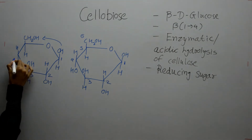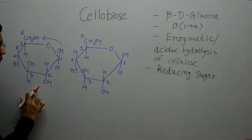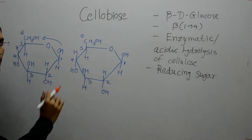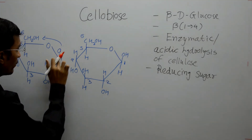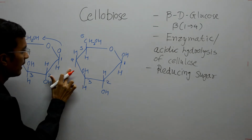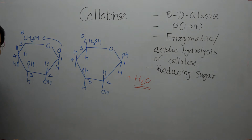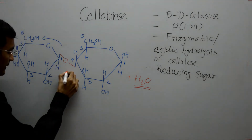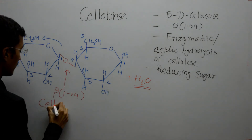The bond is a beta-1,4 bond, which is formed between the first carbon of one beta-D-glucose molecule and the fourth carbon of the other beta-D-glucose molecule. To form the bond, one hydrogen atom is removed from the first carbon, and one hydrogen and one oxygen atom are removed from the fourth carbon in the form of H2O. The remaining oxygen forms the glycosidic bond. This is the beta-1,4 bond, and this is the structure of cellobiose.